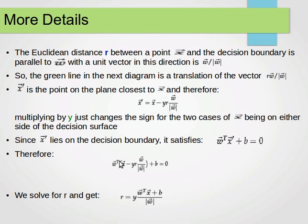We get: w^T times (x minus y·r times the unit vector of w) plus b equals zero. Solving for r, we conclude that r equals y times (w^T x + b) over the magnitude of w.